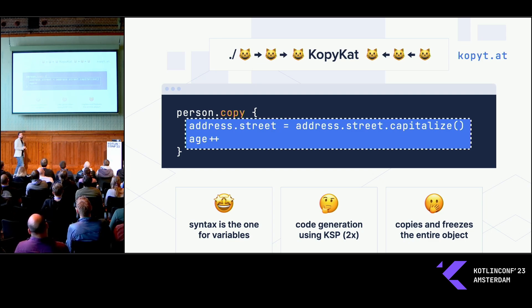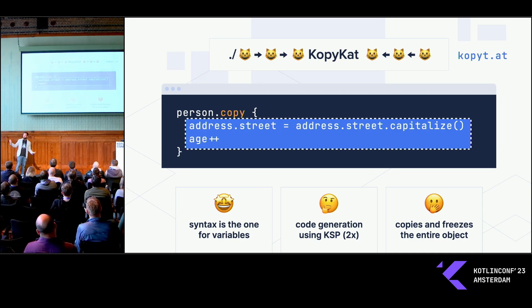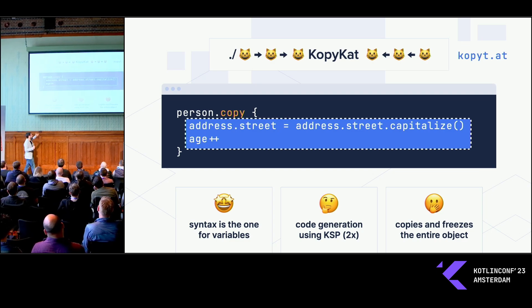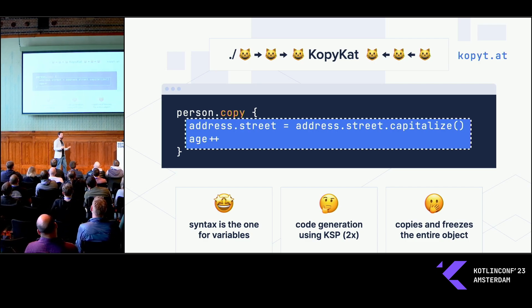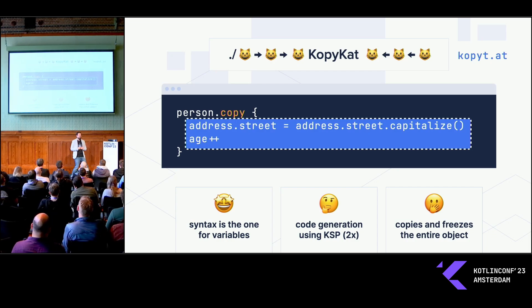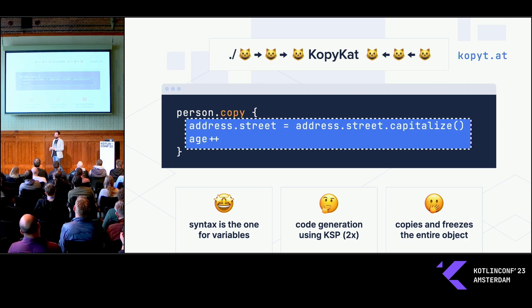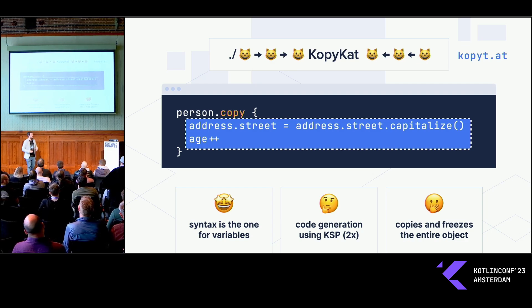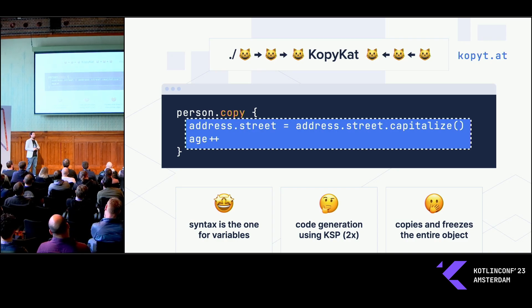And what is maybe not so great is that in order to do so, it needs to create a copy of the object when you start the mutable scope, then you change the stuff, and then you have to freeze it again — we need to actually create the copy. This sometimes takes quite some time, especially if your things contain lists, sequences, and all of that. But the nice thing is that now we can use copy with nice syntax for variables.